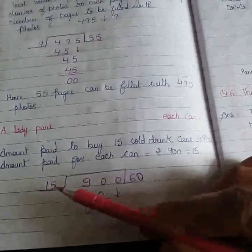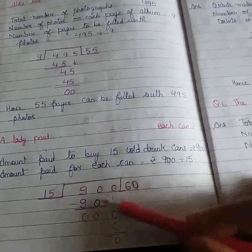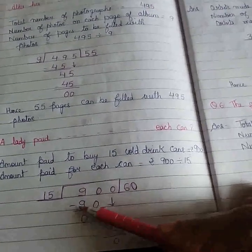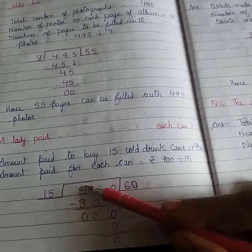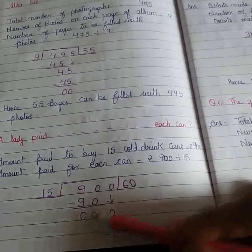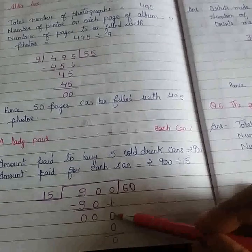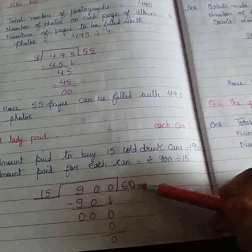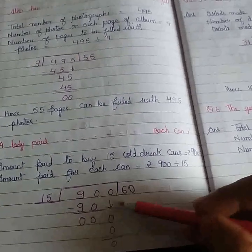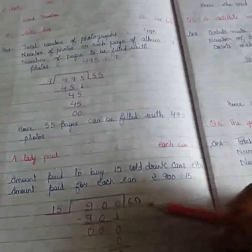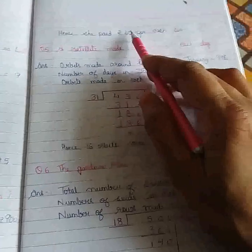So here we have to divide. 15 times 6 is 90. Now subtract: 0 minus 0 is 0, 9 minus 9 is 0 again. And we will take this 0 also down. Then 15 times 0 is 0. Now answer is 60. So cost of 1 cold drink can is Rs. 60.